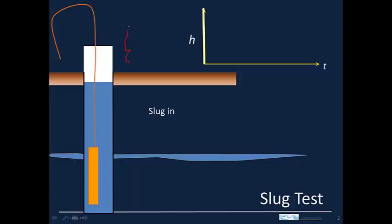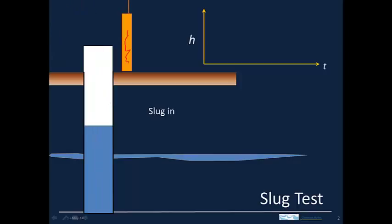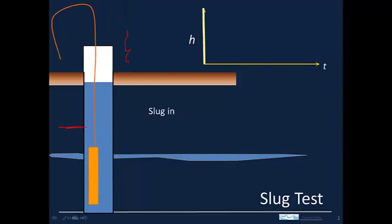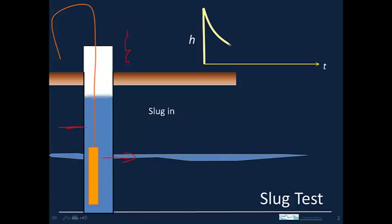In the formation, the head was equal to the initial head. When we introduce the slug, the head rises in the well but it's still at the initial level in the aquifer. There's a big difference in head, which causes water to flow from the well into the aquifer. Initially, because there's a big head difference, the flow is quite large, so the water level drops as a result of this flow.